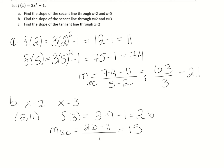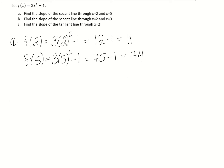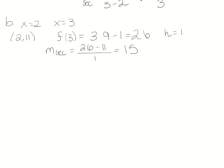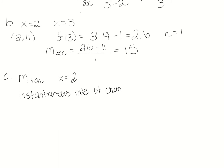In part (a) the change in x (h) was 3, but here it's 1. We're getting closer and closer to the tangent line. To find the slope of the tangent line at x = 2, we use the instantaneous rate of change definition: the limit as h approaches 0 of f(a+h) minus f(a) divided by h. We already know f(2) = 11, so we need to compute f(2+h).